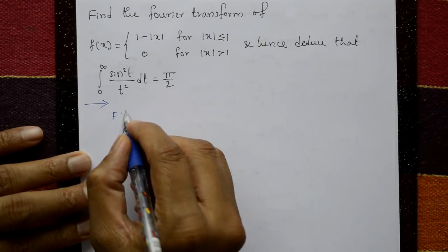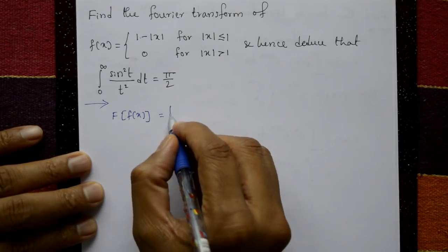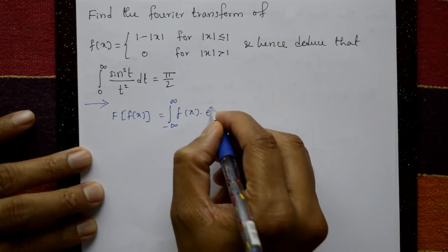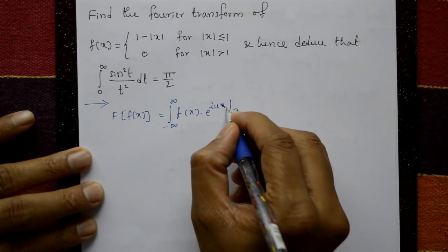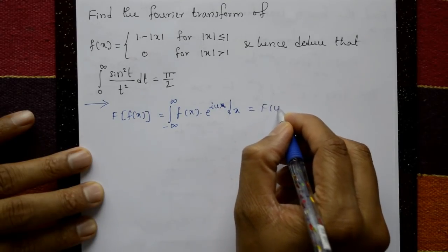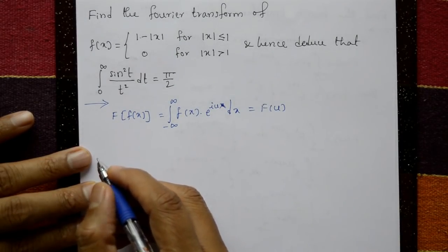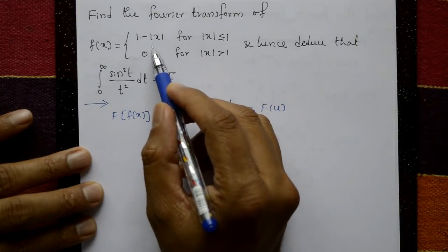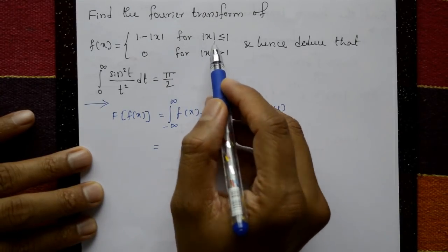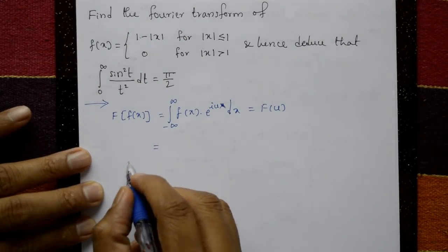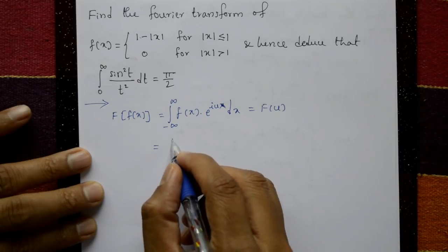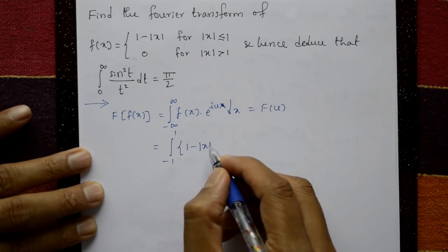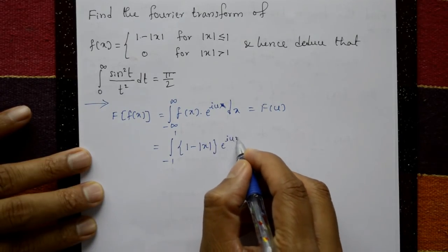Using the Fourier transform: f(u) = integration from minus infinity to plus infinity of f(x) into e raised to i·u·x with respect to x. Since f(x) = 0 for mod x greater than 1, this reduces to integration from minus one to plus one of (1 minus mod x) into e raised to i·u·x with respect to x.